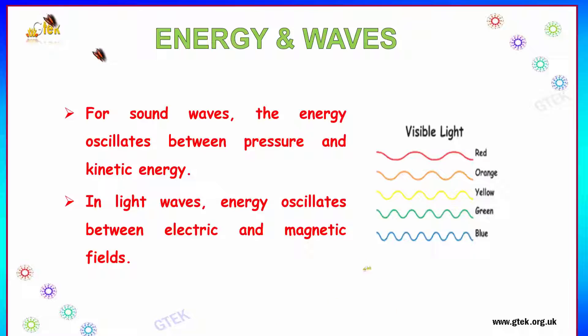You can see some visible light examples for energy and waves: the red wave, the orange, the yellow, the green, and blue. You can find the difference of how the energy level varies for each wave which is represented in different color formats.